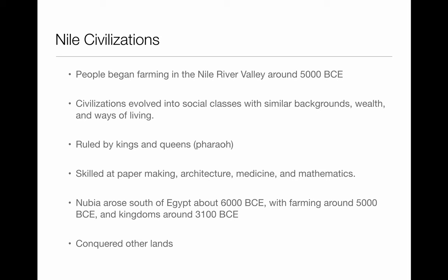Another civilization at this time was Nubia. They were in South Egypt around 6,000 BCE, farming around 5,000 BCE, and started having kingdoms around 3,100 BCE. You can see there are quite a few years between when farming starts and the formation of government. Both Nubia and Egypt started conquering other lands.